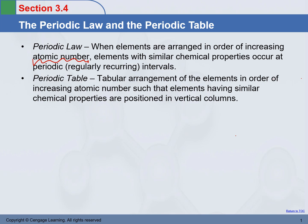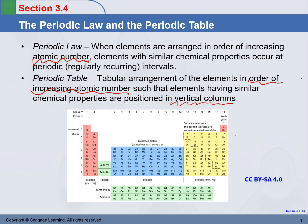A Periodic Table is a table arrangement of elements. The elements are arranged in order of increasing atomic number, and they are arranged in such a way that elements with similar chemical properties are positioned in the same vertical columns. This is an example of a Periodic Table.